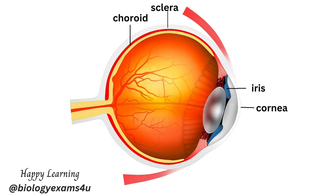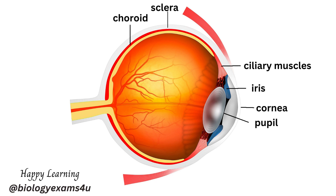The middle layer is the choroid. The iris is the colored part of the eye that sits in front of the choroid and regulates the amount of light entering the eye. The pupil is a circular hole or opening in the center of the iris. The iris adjusts the size of the pupil and controls the amount of light that can enter the eye. The ciliary body is a circular structure that is an extension of the iris, the colored part of the eye.